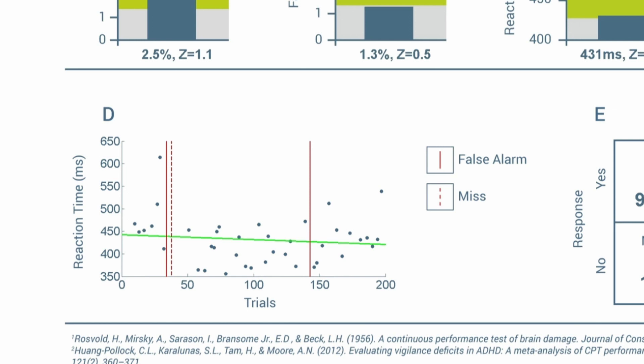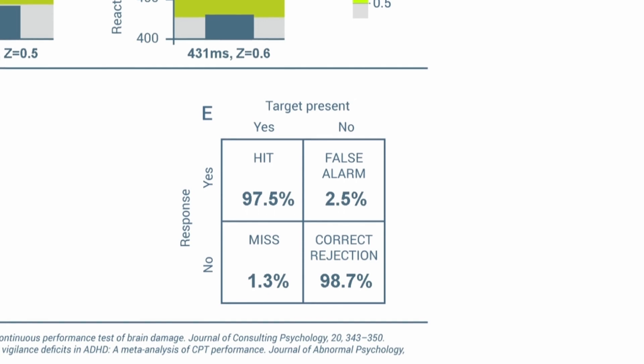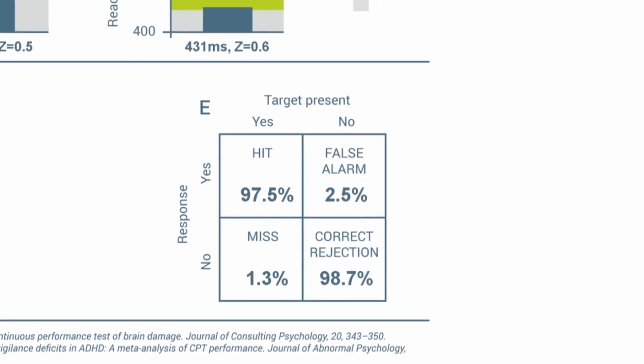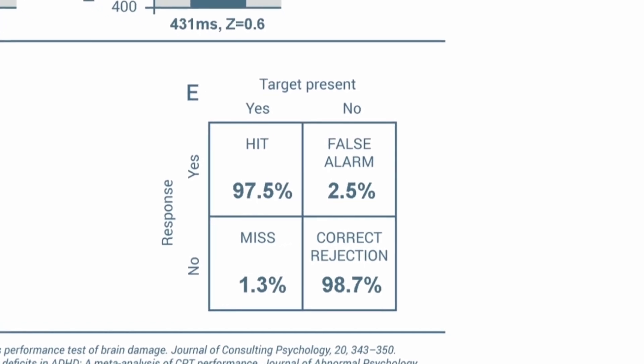The green line represents what's called a least squares line. This line can be used to assess whether there is a trend in the reaction times. In the current example, it seems that the reaction times are decreasing somewhat across trials, which is perhaps a bit odd, as one might expect that the reaction times would increase as mental fatigue sets in. Figure E shows the so-called confusion matrix. This table shows the percentages of hits, false alarms, misses, and correct rejections. Correct rejections are trials where letters other than the letter B was presented and no response was given.